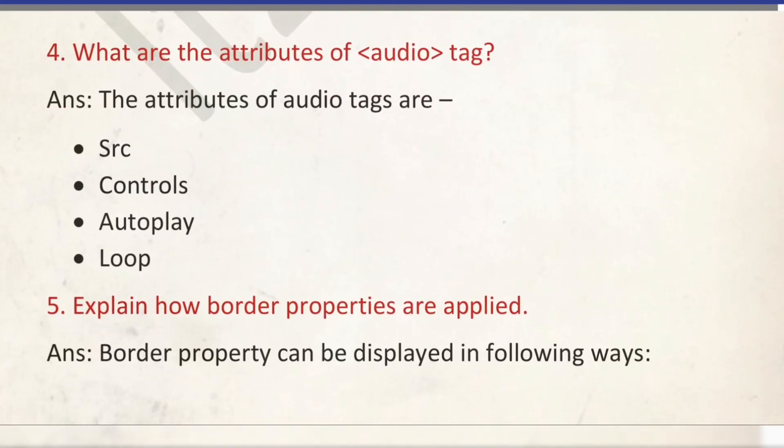Number 4: what are the attributes of the audio tag? These are src, controls, autoplay, and loop. Src is the source of the audio. Controls displays the controls of the audio player. Autoplay automatically plays the audio when we open the page. Loop repeats the audio when it finishes.